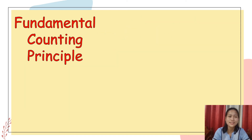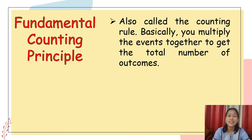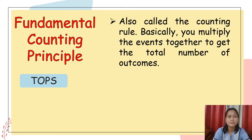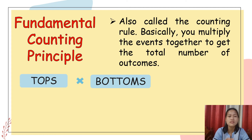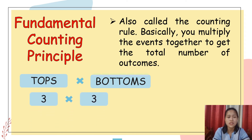And lastly, we have the fundamental counting principle, also called the counting rule. Basically, you multiply the events together to get the total number of outcomes. In the given experiment, we have two events — the choices of Jane for her tops and bottoms. So we multiply: she has three tops multiplied by three bottoms, which gives us a product equal to nine.